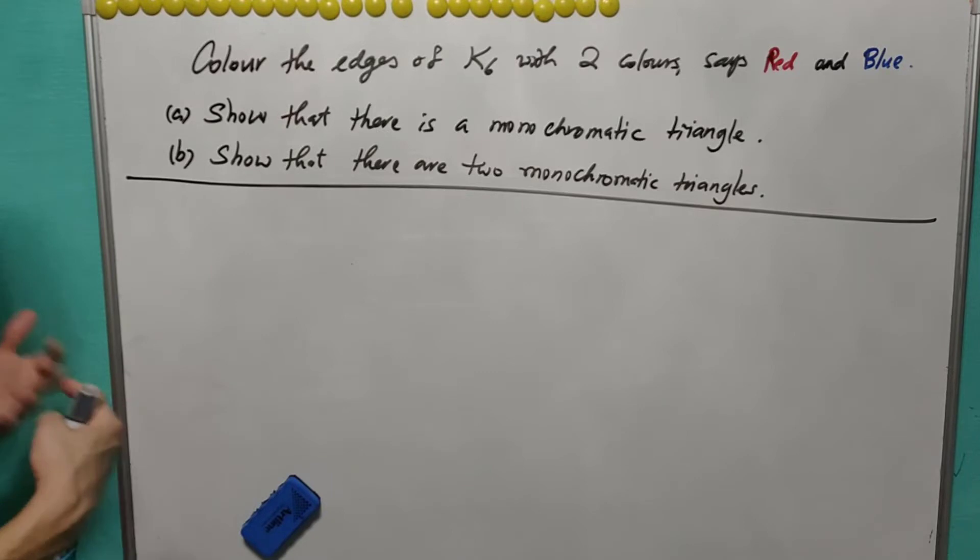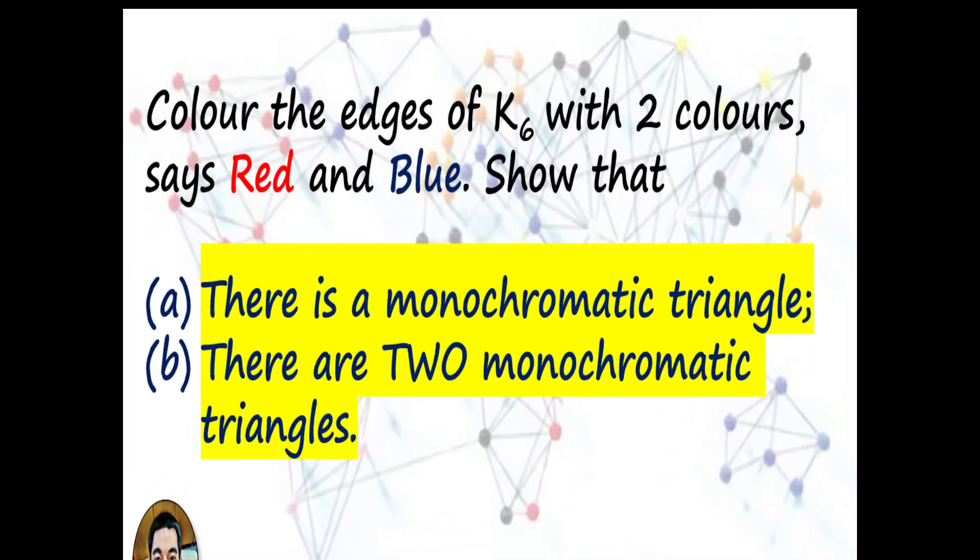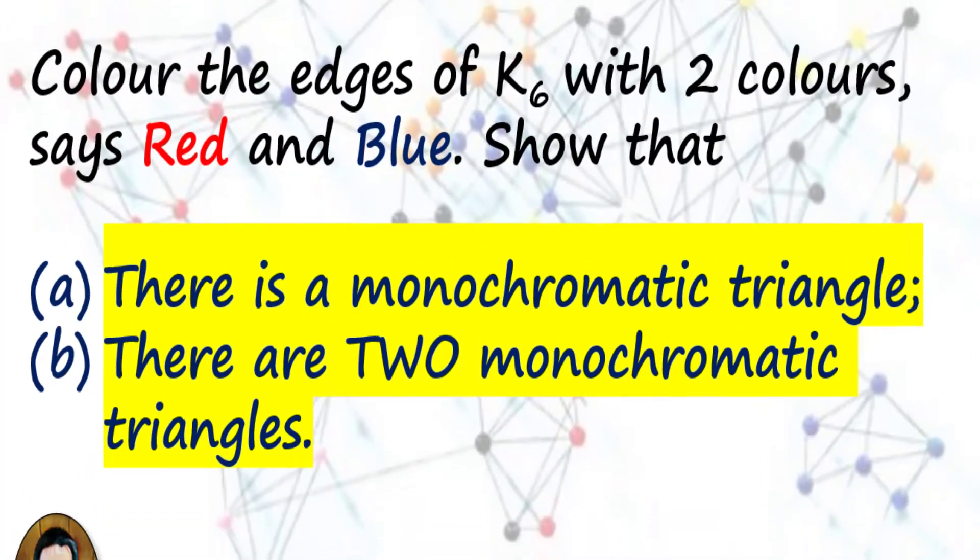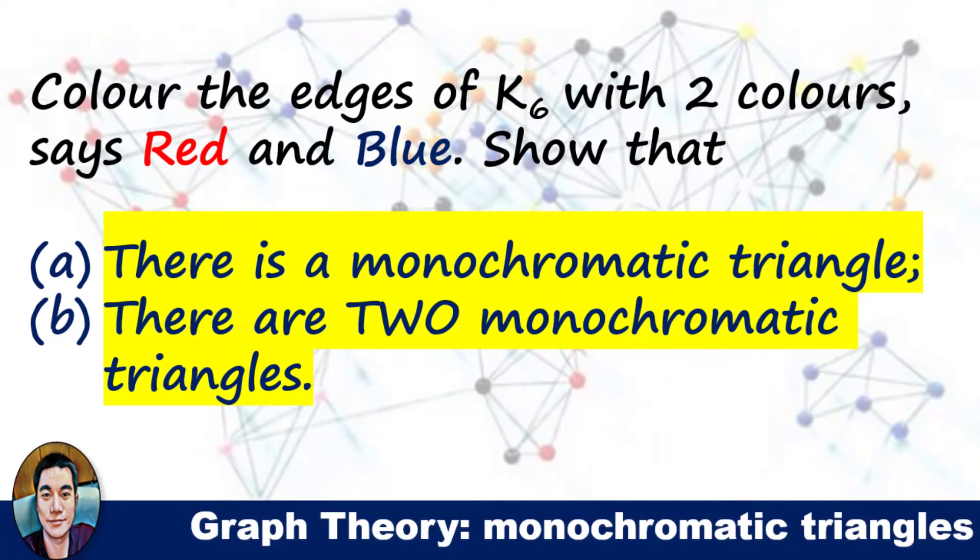And later on, you want to construct a graph of K6 with the coloring of the edges so that there are exactly two monochromatic triangles. Please have a good try before you look at the answer. Pause the video now if you wish to solve it. Keep watching the video once ready.